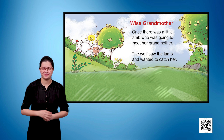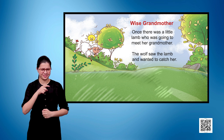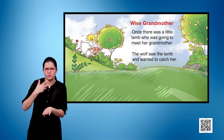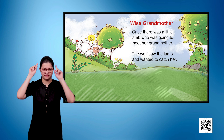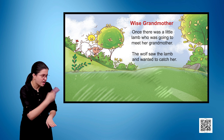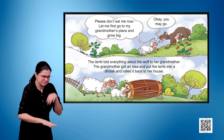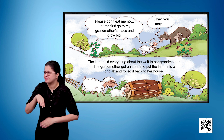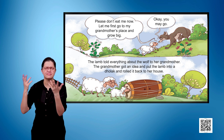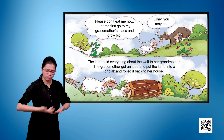Wise Grandmother. Once there was a little lamb who was going to meet her grandmother. The wolf saw the lamb and wanted to catch it. The lamb said, 'Please don't eat me now. Let me first go to my grandmother's place and grow big.'